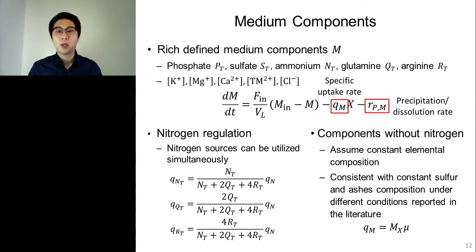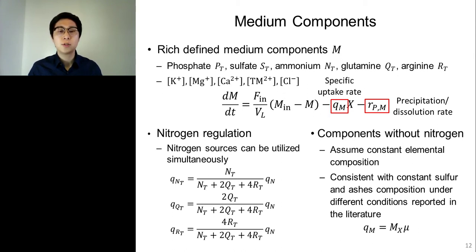Moving on to the medium components, the defined medium components include total phosphate, sulfate, ammonium, glutamine, and arginine species, as well as potassium, magnesium, calcium, transition metals, and chloride. The differential balances for these components include terms for specific uptake rate and precipitation and dissolution rate. For nitrogen sources — ammonium, glutamine, and arginine — they can be utilized simultaneously by Pichia pastoris. Actual nitrogen regulation would be complicated, but here we simplify the model so that nitrogen sources are utilized based on their molar ratio of nitrogen. For components without nitrogen, specific uptake rates are modeled assuming constant elemental compositions, which is consistent with the literature reporting constant sulfur and ash composition under different operating conditions.